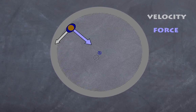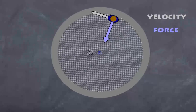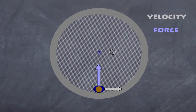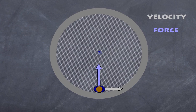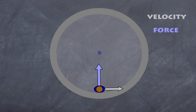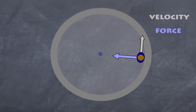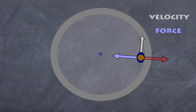What would happen if the walls suddenly disappeared? The force would disappear and you would continue to move in a straight line. Some people get confused by an apparent force often called centrifugal force, but I want to make it perfectly clear — there is no such thing as centrifugal force. The force you are actually experiencing is the normal force from the surface, which is the centripetal force pointing toward the center.